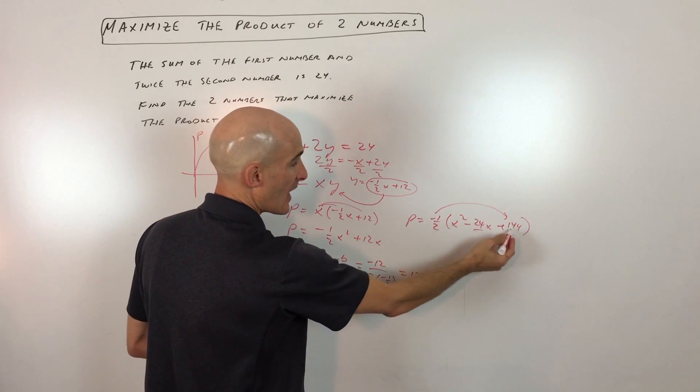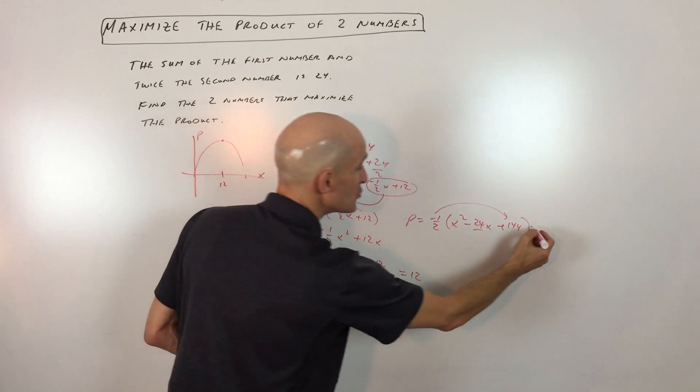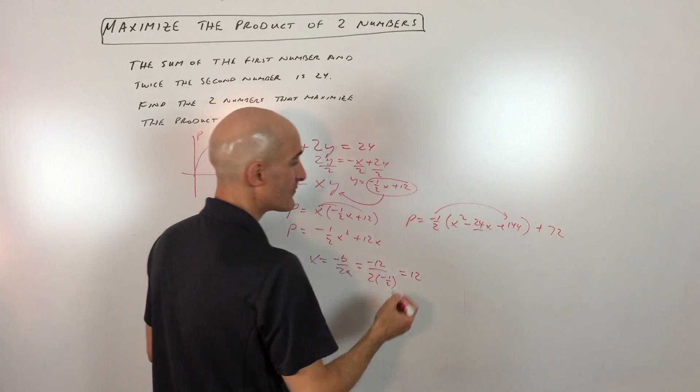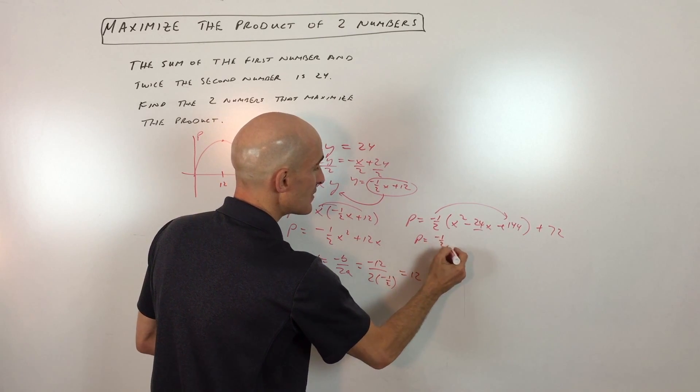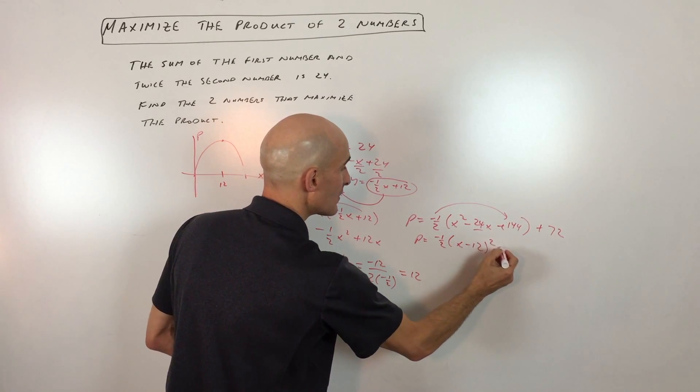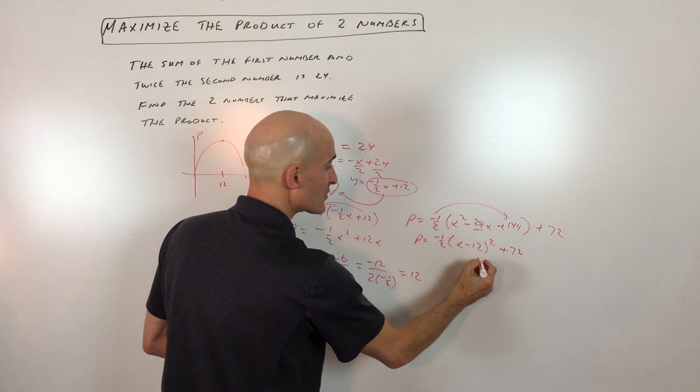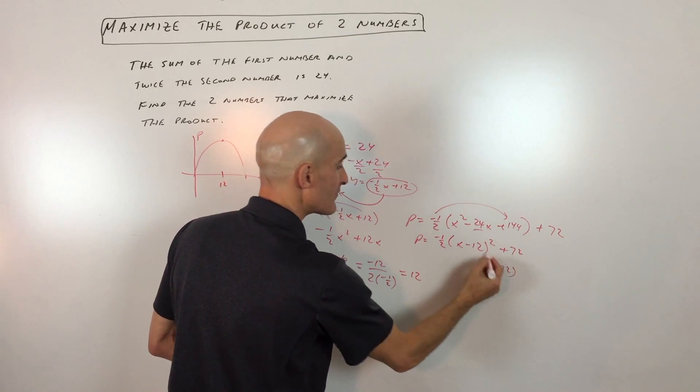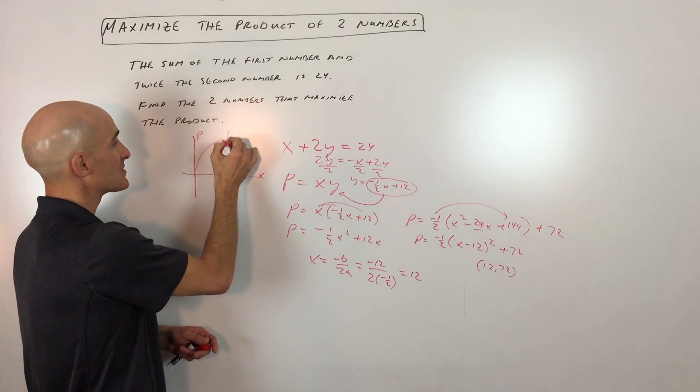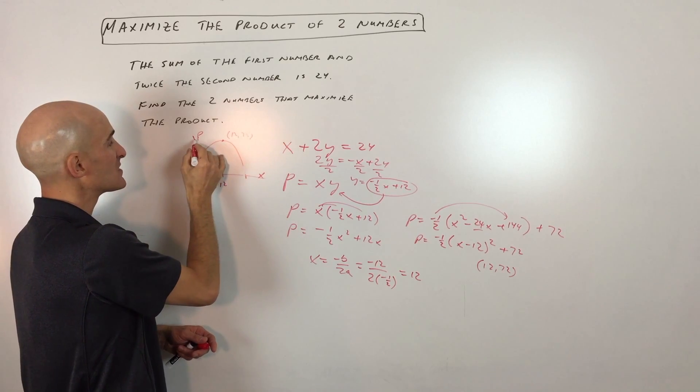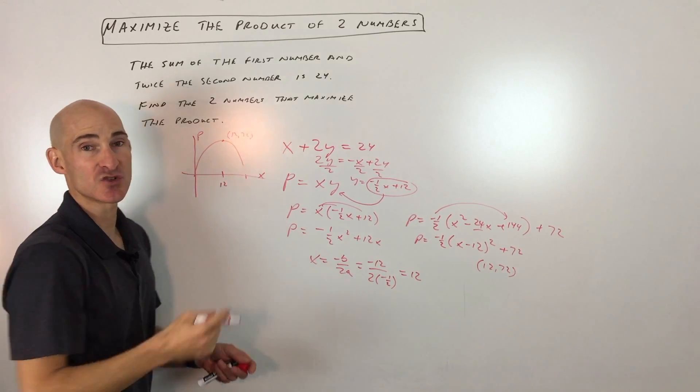that's actually negative one-half times 144, which is negative 72. To counterbalance that, I'm going to add 72. And so you can see that if we factor this, now you can see that the vertex is at 12, 72. So you can see here this is 12, 72, which means the product is 72 and x is 12.